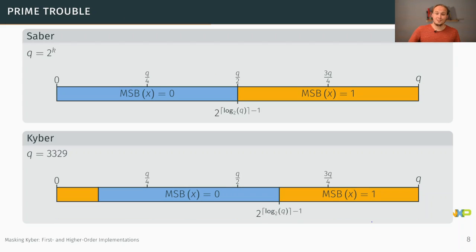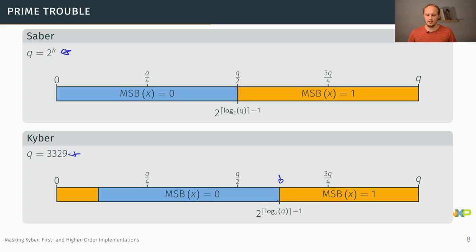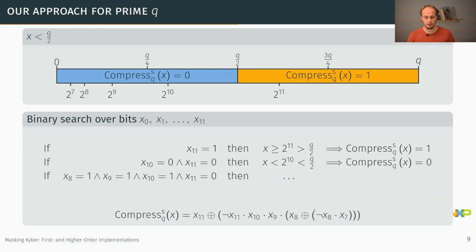Unfortunately in Kyber we have a prime modulus, so the most significant bit has a certain offset to q/2. This means the intervals defined by the most significant bit have a different shape — the MSB is 0 on the left and 1 on the right — and we cannot use the MSB approach directly. We therefore need a different approach for prime q and arbitrary moduli.